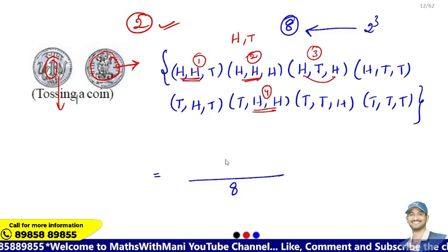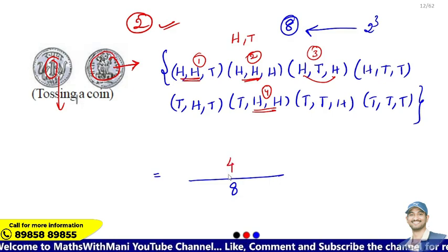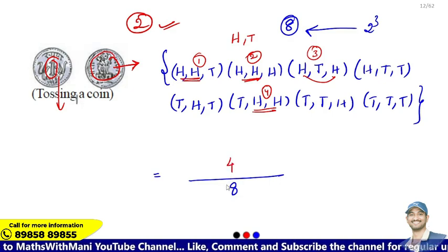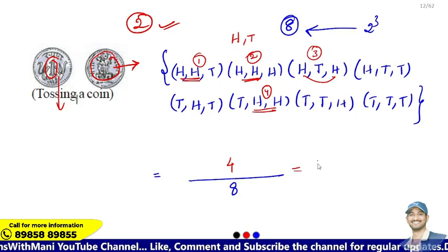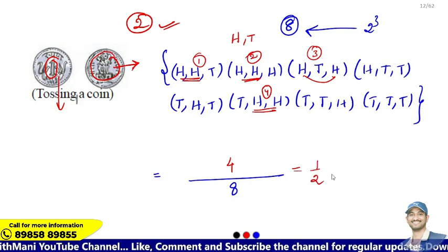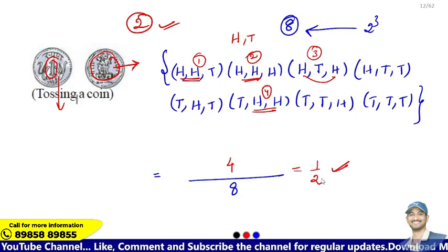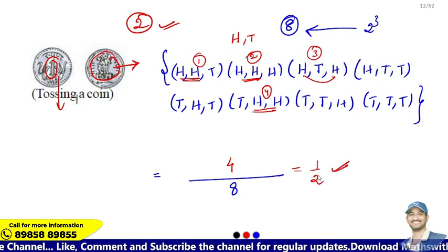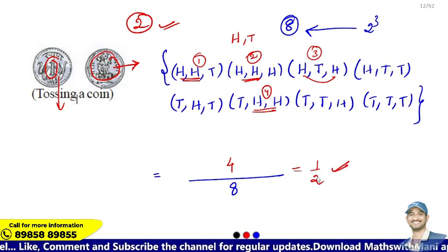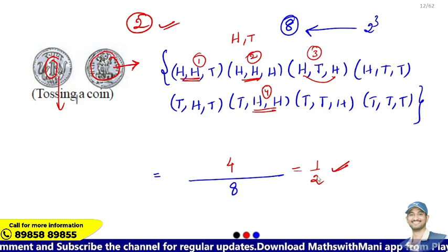The total number of possibilities is 4. So the probability is 4 by 8, which equals 1 by 2. That is the probability of getting at least 2 heads when 3 coins are tossed simultaneously.